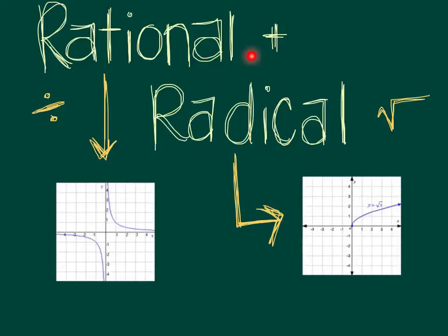The one we've seen is 1 over x. And radical, just being a fancy word for the square root. So here we have the square root of x.